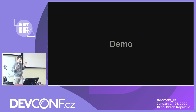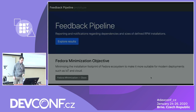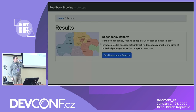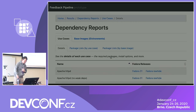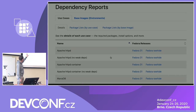It's about a service that will monitor things. I'll show you — if you open this URL, this is where the service is. I'm quite happy about the URL. If you go there you see something called Feedback Pipeline, and it says it's reporting notifications regarding dependencies and sizes of defined upstream installations. So let's have a look — I click here on the results, and there are these dependency reports. I can see two major things: use cases and base images.